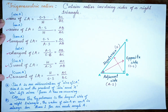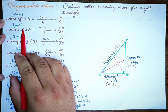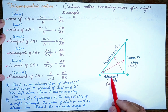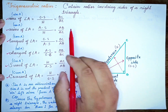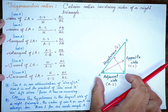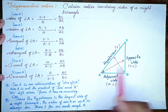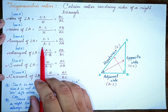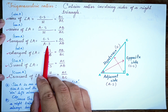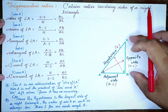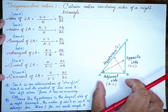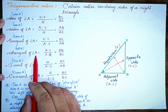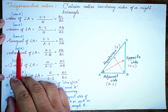The sine of A will be a short form: sin A. That will be the opposite side over the hypotenuse, which is BC over AC. The cotangent of angle A, written as cot A, will be the adjacent side over the opposite side.